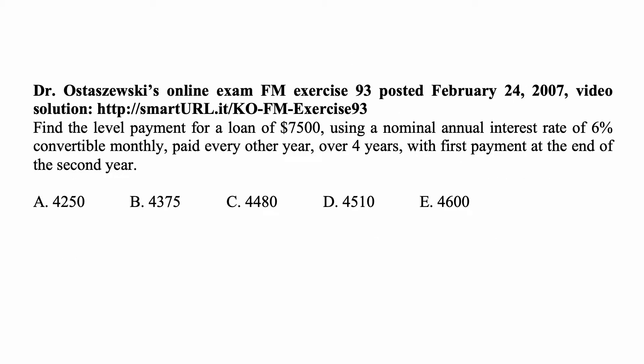Here's a problem for today for exam FM on financial mathematics. Find a level payment for a loan of seven thousand five hundred dollars using a nominal annual interest rate of 6% convertible monthly, paid every other year over four years with first payment at the end of the second year.